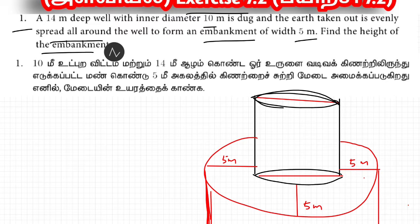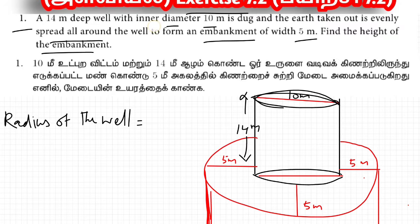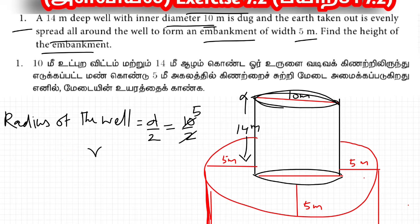For the well: depth h = 14 meter, diameter = 10 meter, so radius r = diameter divided by 2 = 10 by 2 = 5 meter. Small r equals 5 meter.